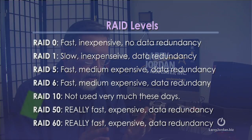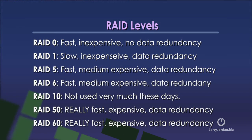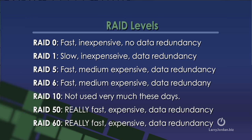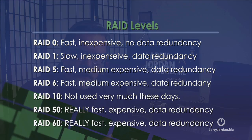A RAID is a high-speed data storage mechanism which combines the power of multiple hard drives to give you greater storage and greater speed. RAIDs exist in different levels. Here's the list of the different RAID levels that exist: RAID 0, RAID 1, RAID 5, RAID 10, RAID 50, RAID 60.